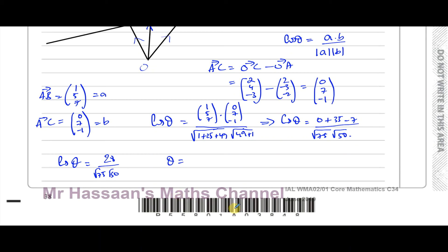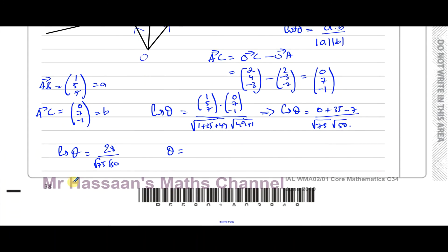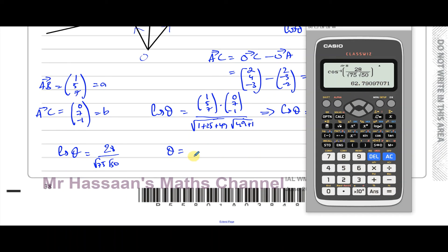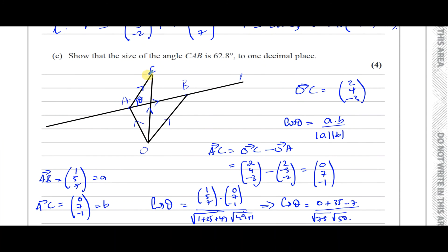Therefore θ = arccos(28 / (√75 × √50)). Making sure the calculator is in degree mode, I compute inverse cosine of 28 divided by √75 times √50. The result is 62.790... degrees, which to one decimal place is 62.8 degrees. That confirms the answer for part C.